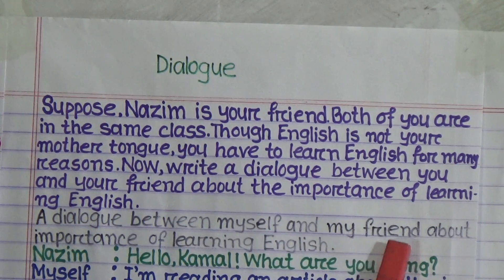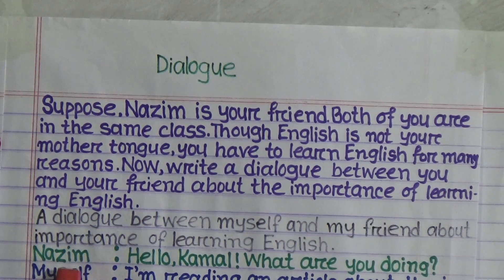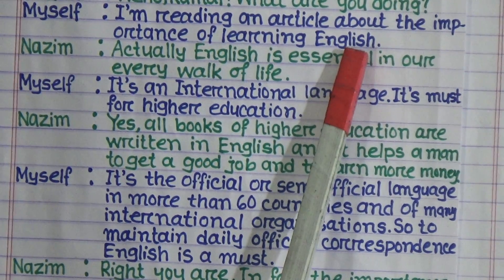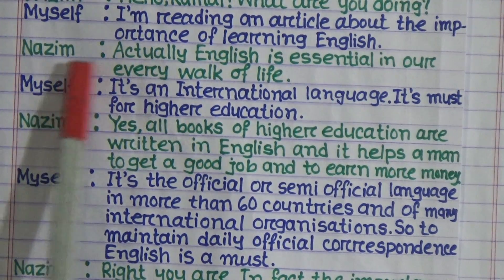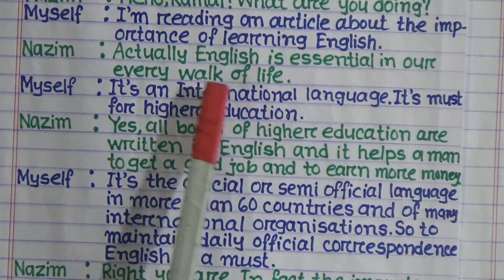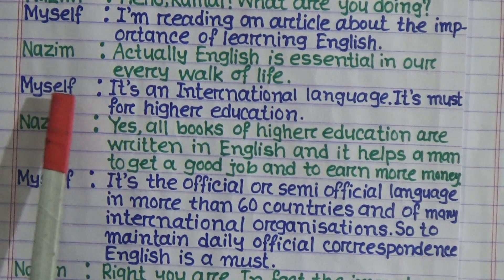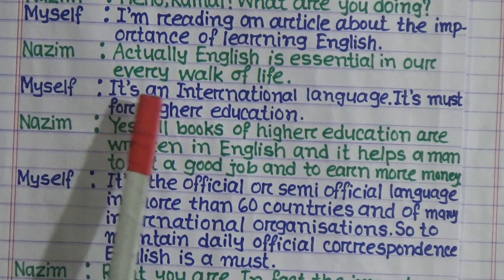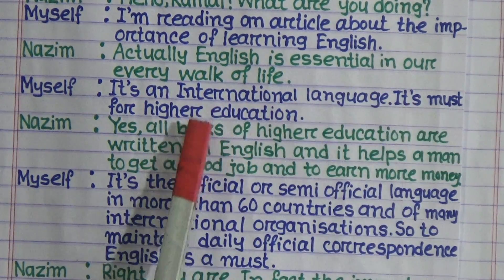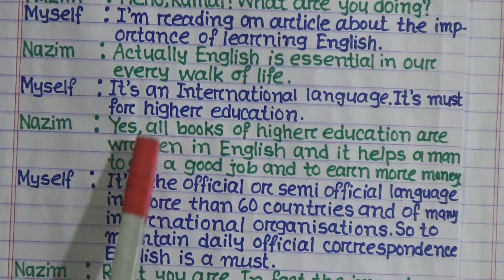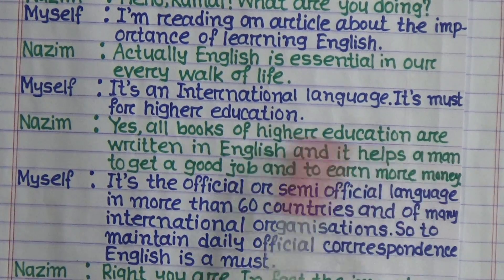A dialogue between myself and my friend about the importance of learning English. The conversation starts with Najim. Najim asks: 'Hello Kamal, what are you doing?' Myself: 'I'm reading an article about the importance of learning English.' Najim says: 'Actually, English is essential in our every walk of life.' Myself says: 'It's an international language; it's a must for higher education.' Najim says: 'Yes, all books of higher education are written in English, and it helps a man to get a good job and to earn more money.'